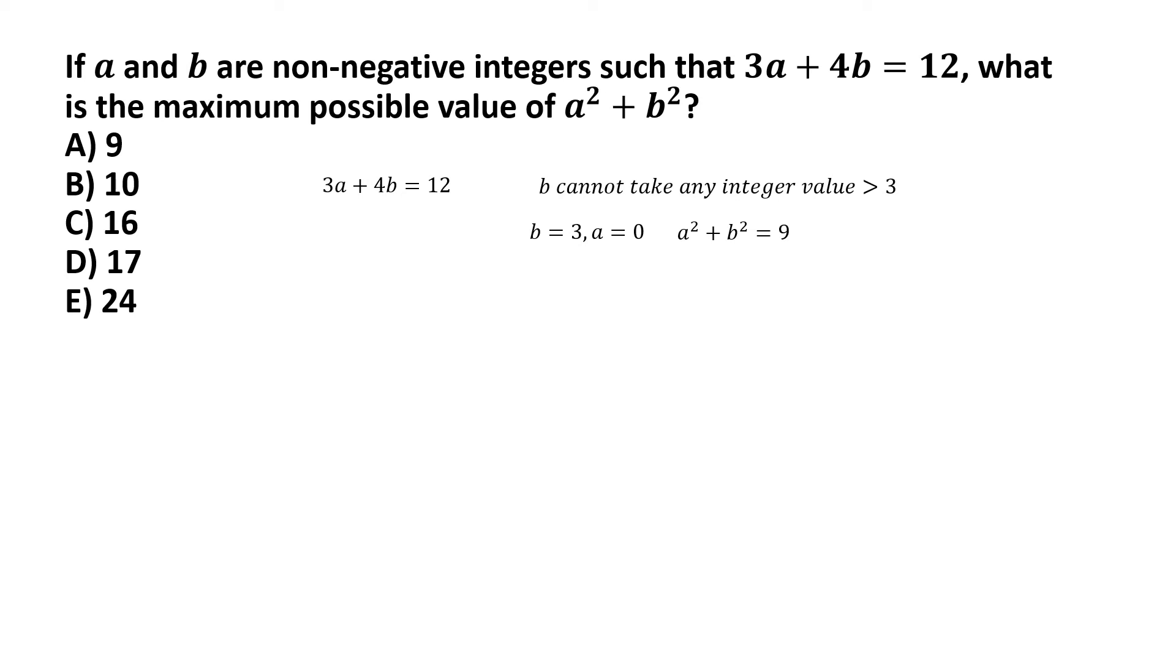But we have to test out more values. So, what about if b equal to 2? Again, we plug in b equal to 2 in the equation and solve for a, and we get a equal to 4 by 3. It's not an integer. So, this is not an allowable set.